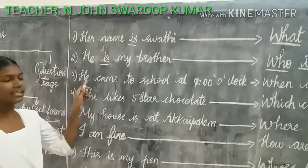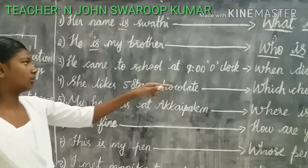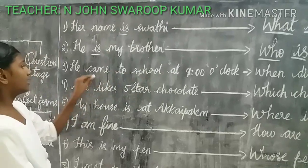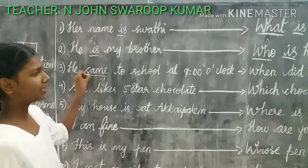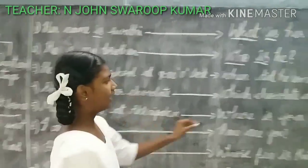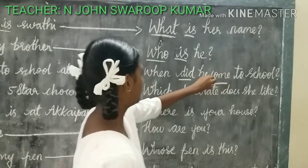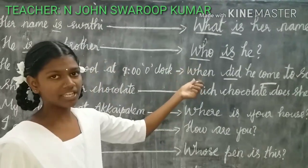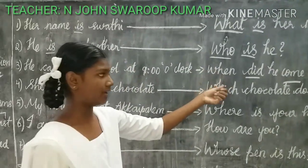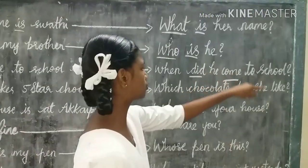The third example is: he came to school at 9 o'clock. Here 'came' indicates 'did' and 'come.' We use the WH word 'when.' So the framed question is: When did he come to school?